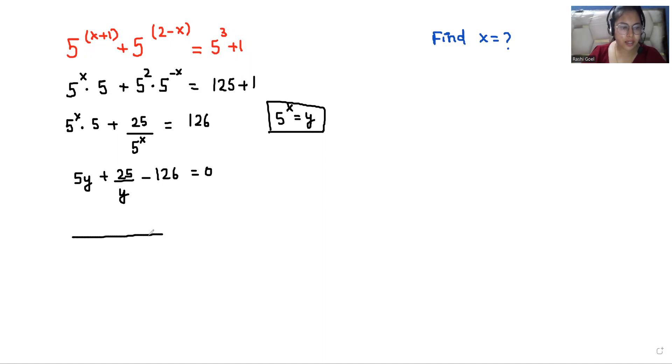So if I take the LCM, then 5y^2 plus 25 minus 126y equals 0. So 5y^2 minus 126y plus 25 equals 0.